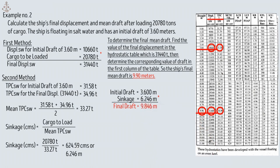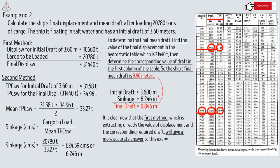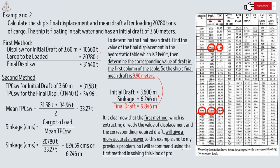We can see there is a difference in the answers between the two methods. But it is now clear that Method 1 — directly extracting displacement values and the corresponding required draft from the hydrostatic table — gives a more accurate answer for both examples. I recommend using the first method for solving this kind of problem.